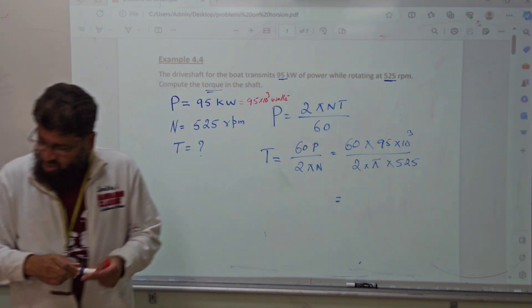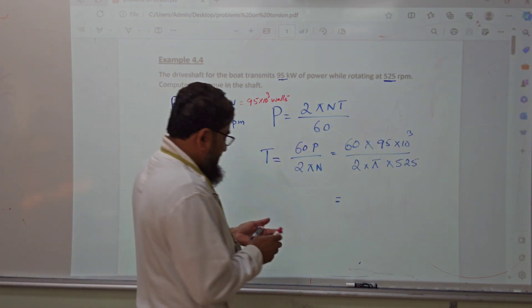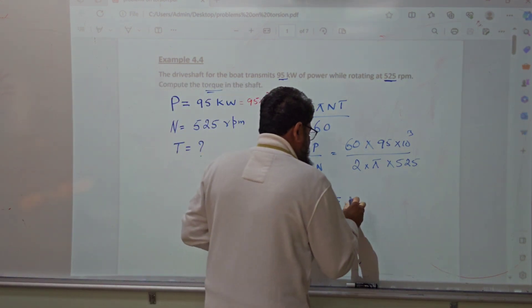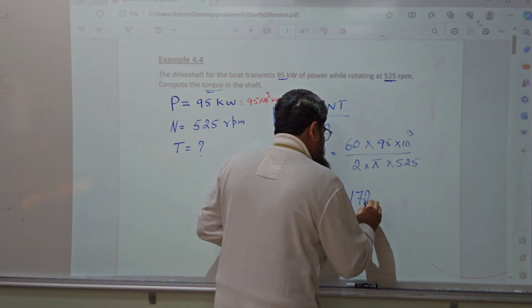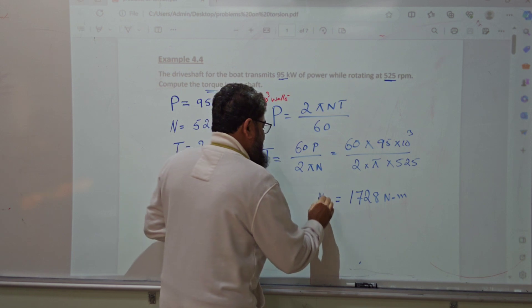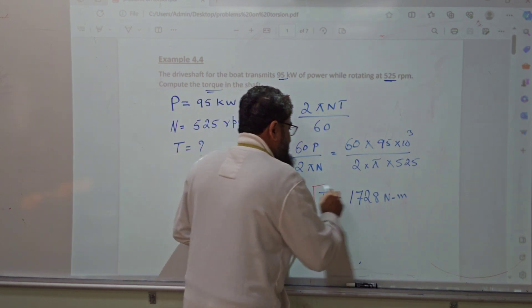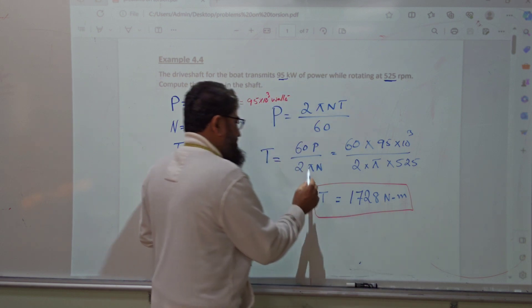You just calculate the value and you get 1728 newton-meters. This is the value of torque. This is what he wants in this problem. It's a very simple problem.